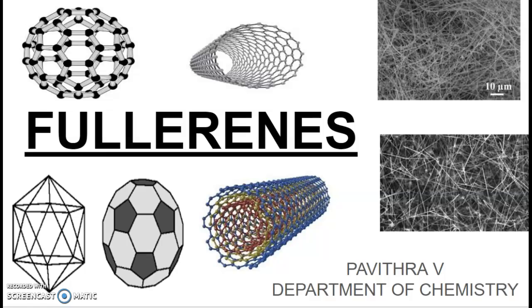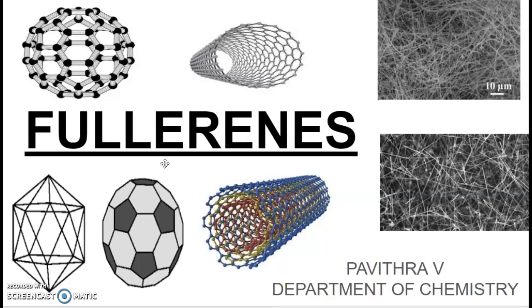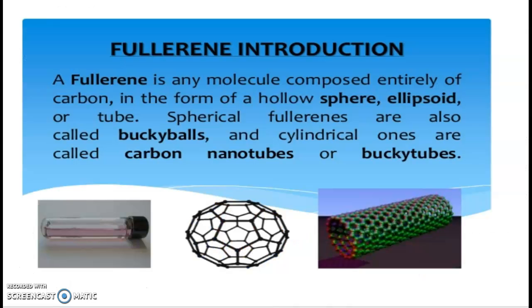Hi everyone, my name is Pavit Ravi, Department of Chemistry. Today we are going to discuss a topic called Fullerenes. Fullerenes are nothing but allotropic forms of carbon, made up of carbon with different physical properties. This is the definition of fullerenes.